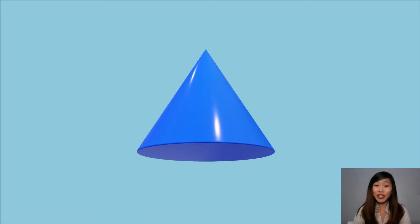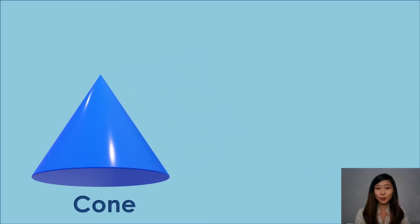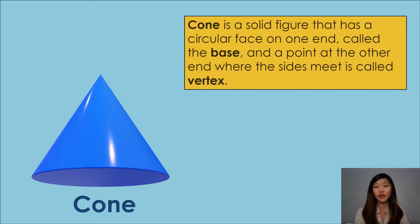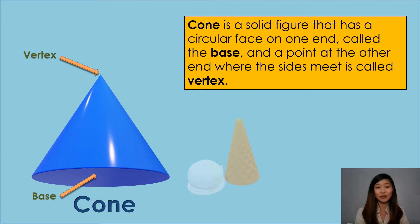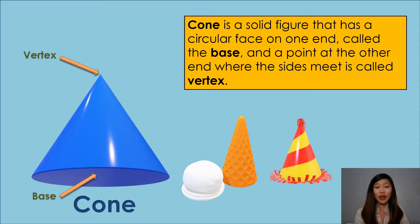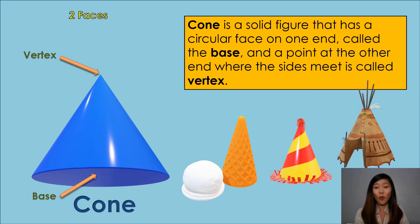Moving on, this figure is called a Cone. A cone is a solid figure that has a circular face on one end called the base, and a point at the other end where the sides meet called the vertex. I'm pretty sure we all have enjoyed an ice cream cone — that is an example of a cone. Some other examples include a party hat or a tent. It has two faces, one edge, and one vertex. Can you name other objects that are cones? Marvelous! Those are examples of a cone.